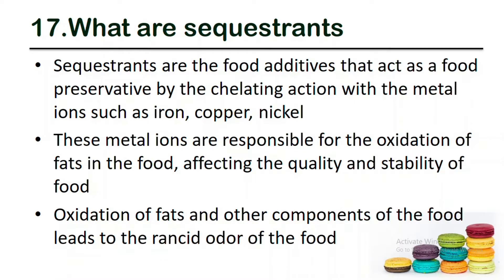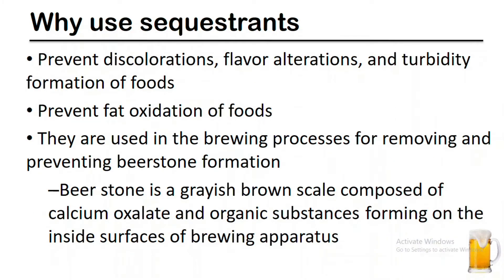First, let's talk about sequestrants. They are food additives that can act as food preservatives by the chelating action with metal ions such as iron, copper, and nickel. These metal ions are responsible for the oxidation of fats in the food that affect the quality and stability of food. Sequestrants can prevent discoloration, flavor alteration, and turbidity formation of foods by preventing oxidation.